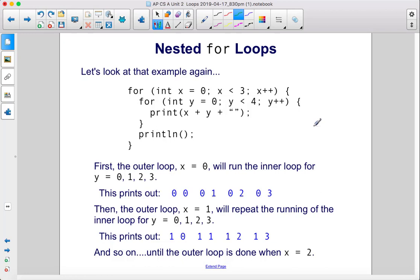Let's look at that example again. First, the outer loop, where x equals zero, will run the inner loop for y values of zero, one, two, and three.